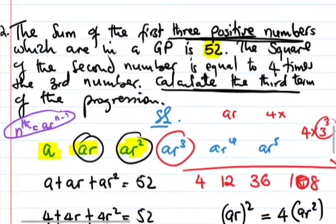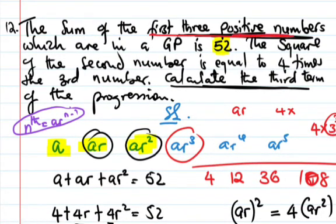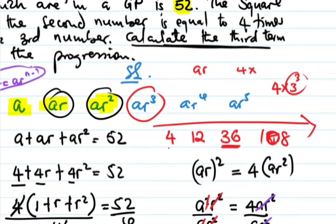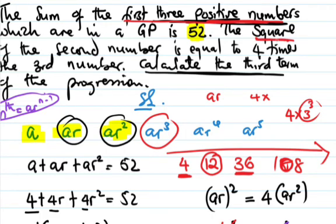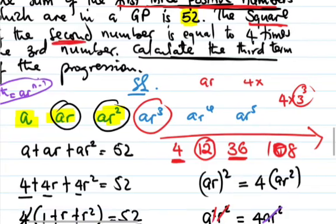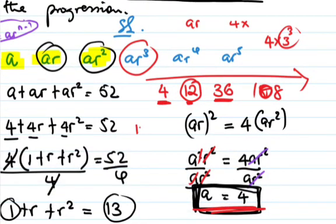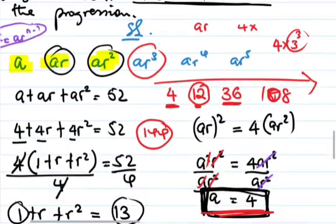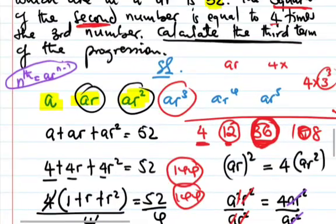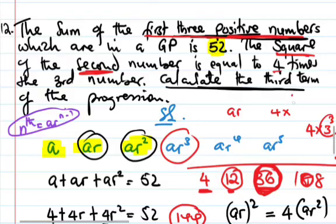If we go back to our question, the sum of the first three positive numbers of a GP is 52. We have 4, 12, and 36, which gives us 52. And for the second part, the square of the second number: 12 squared is 144. Four times the third number: 4 times 36 is 144. So our answers are correct.